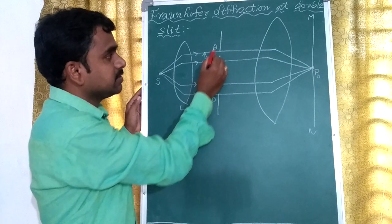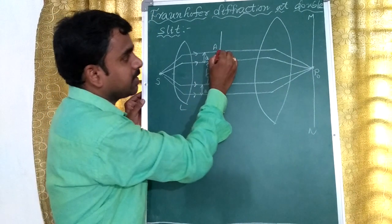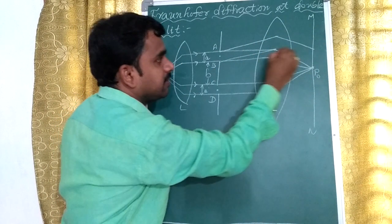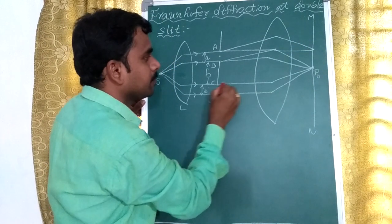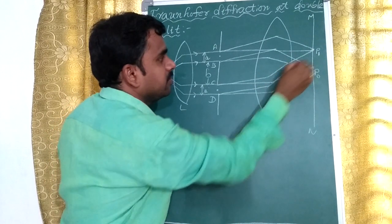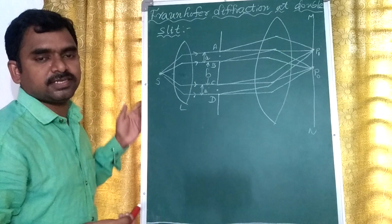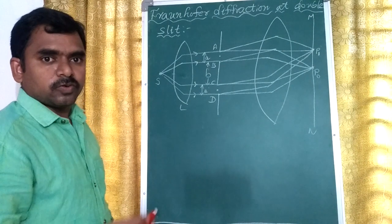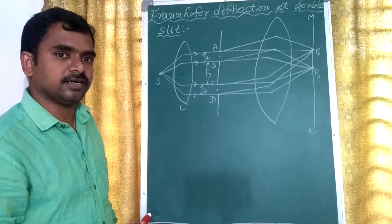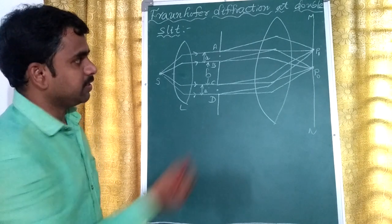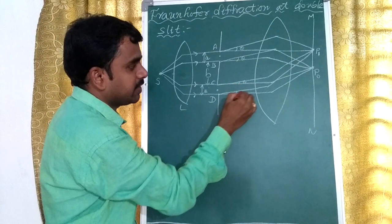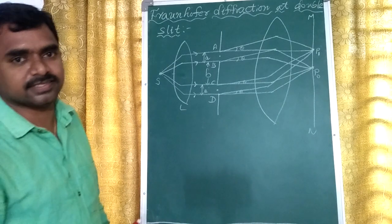When secondary waves strike on the slit, they will automatically bend — that means diffraction takes place. The diffracted waves reach the screen at position P1, where there may be maximum intensity or minimum intensity. To know whether they are forming maximum or minimum intensity, we have to calculate the path difference. These diffracted rays make some angle with the principal ray, called the angle of diffraction, theta.